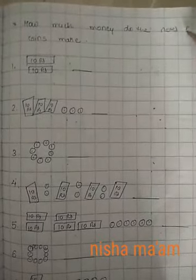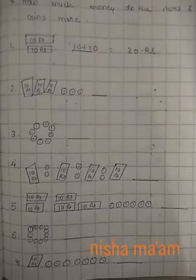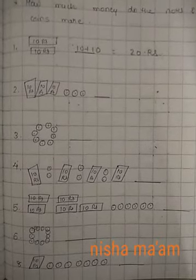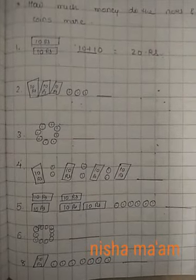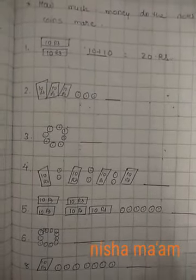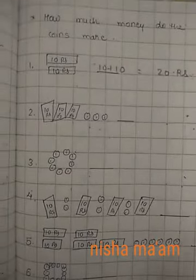How much money do the notes and coins make? Now we have seen 1 or 2 notes. 10 plus 10 equal to 20 rupees. 1, 2, 3, that's 3 notes. How much money do the notes?